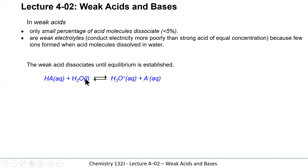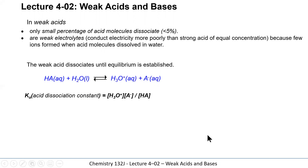As opposed to a strong acid, where all of the HA particles would ionize — there wouldn't be an equilibrium, it would simply go to completion. As with all equilibrium expressions, we can get the equilibrium constant Ka, where A designates it's an acid. It's the concentration of A⁻ times concentration of H₃O⁺ divided by the concentration of HA. The concentration of H₂O is considered a constant and is not included in the equilibrium expression.